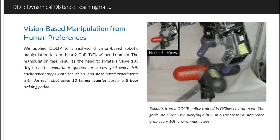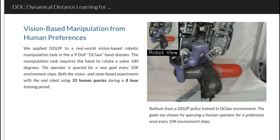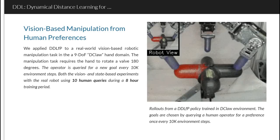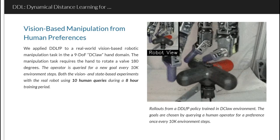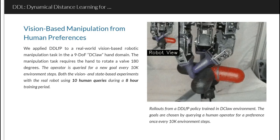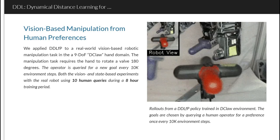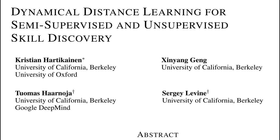Hi there. If you look at this robot, this robot has learned to turn this valve by itself. By itself isn't really correct, but it has learned it in a semi-supervised way with only 10 human inputs along the entire learning trajectory. So only 10 times was there a true reward for this reinforcement learning procedure, and the rest is unsupervised discovery of this skill. The paper we're going to look at today is Dynamical Distance Learning for Semi-Supervised and Unsupervised Skill Discovery by Christian Hartikainen, Xinjiang Geng, Thomas Harnoja, and Sergei Levine.